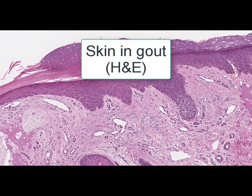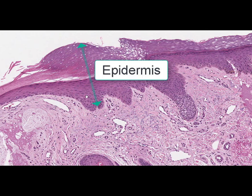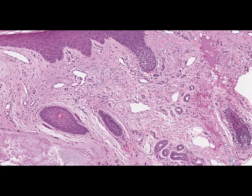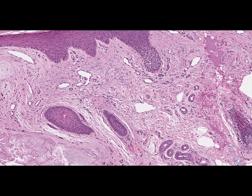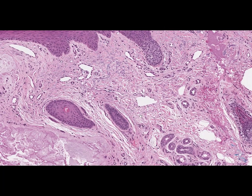On this slide we can see a histological section of the skin. The staining method is hematoxylin and eosin. The name of the slide is skin in gout. At low magnification, we can see the layers of the skin: the epidermis layer, the dermis layer including the papillary layer and reticular layer, as well as skin appendages. Gout is an example of mixed degeneration associated with nucleoprotein metabolism disorder, with accumulation of purine substances and purine bases, resulting in uric acid salt deposition in the tissues.